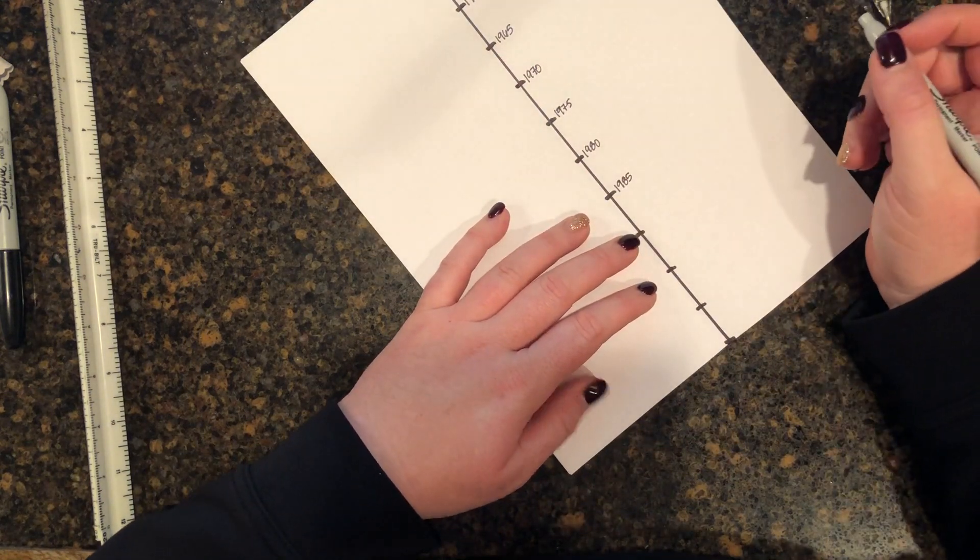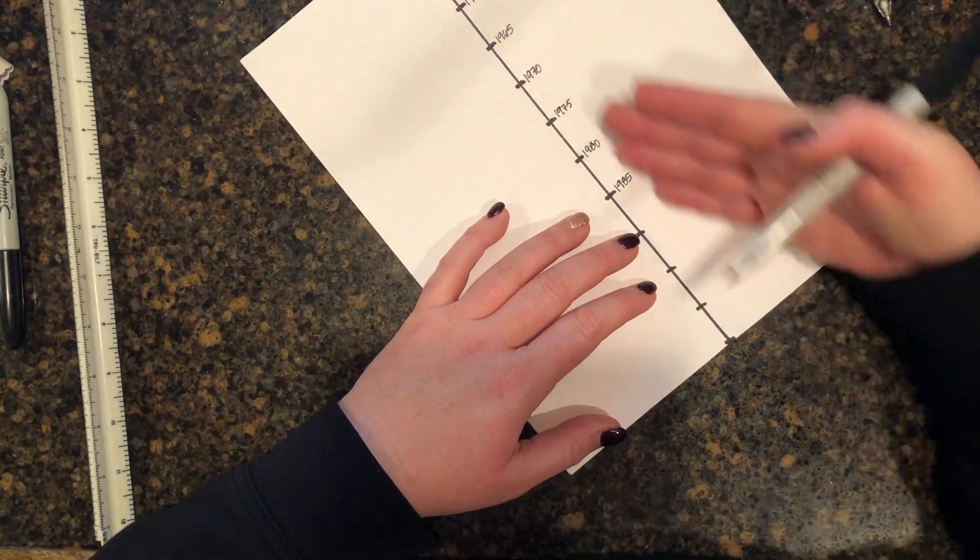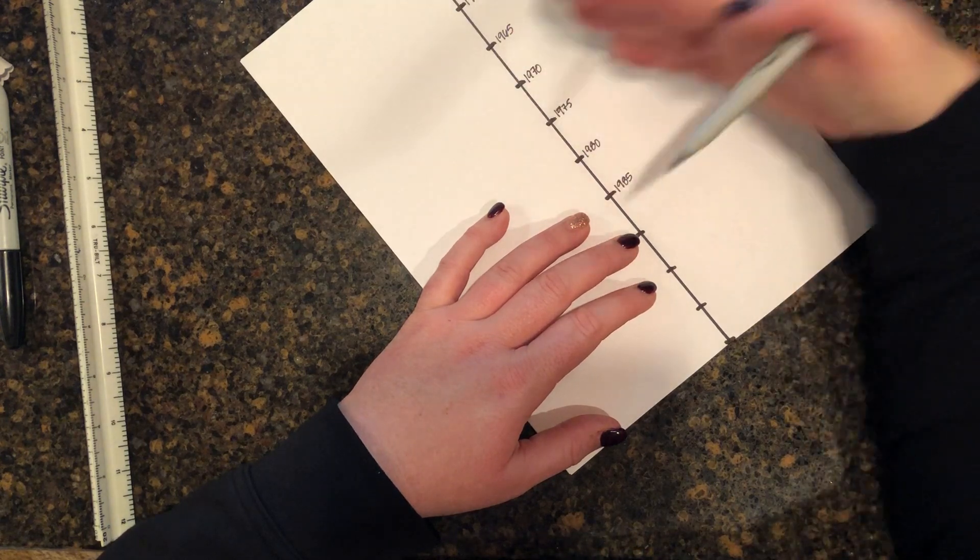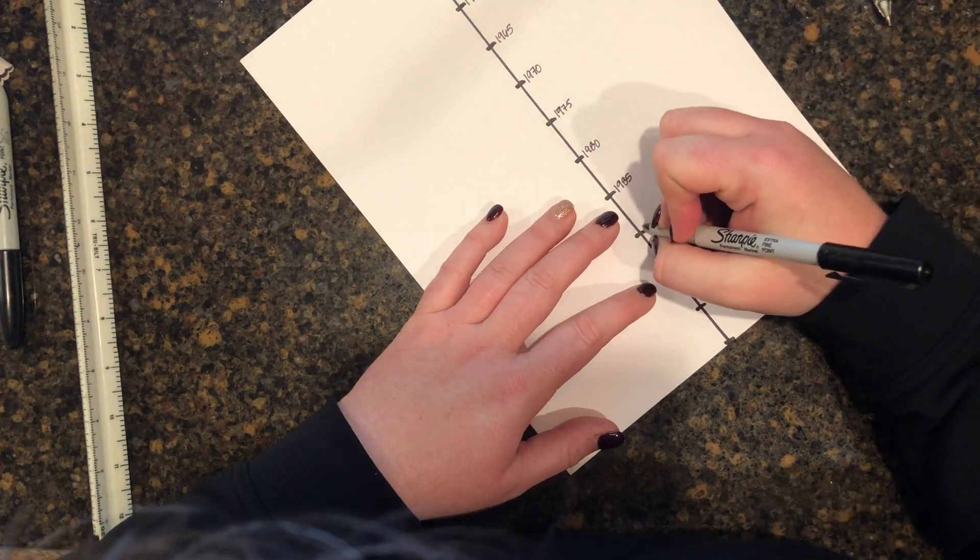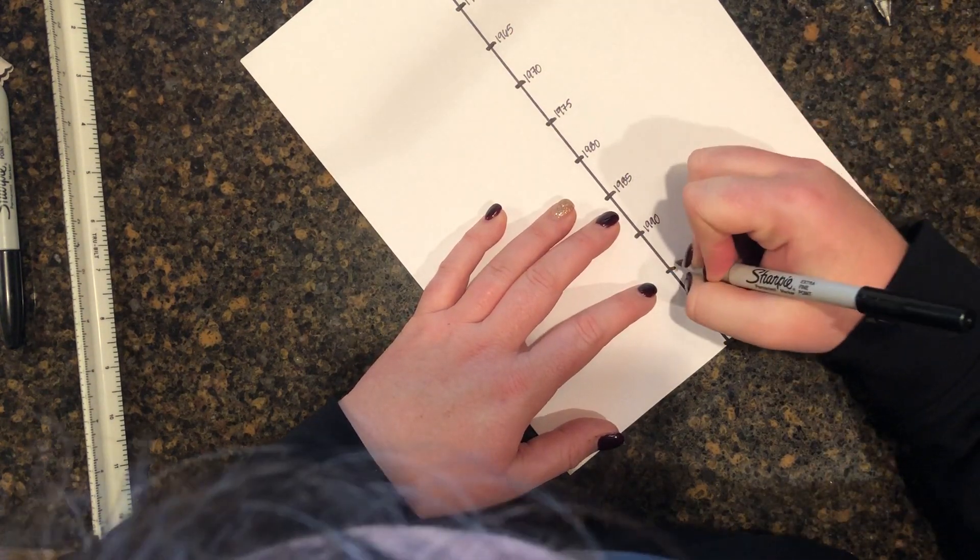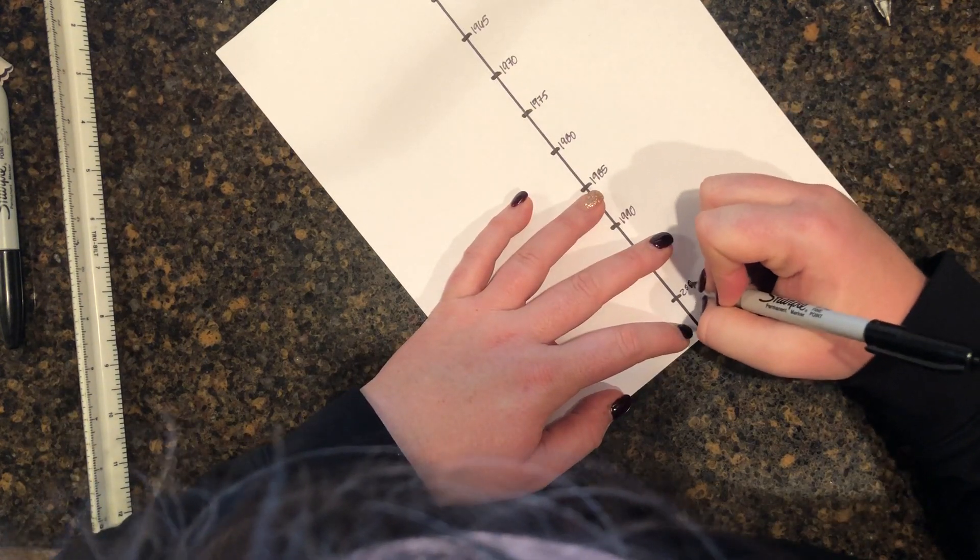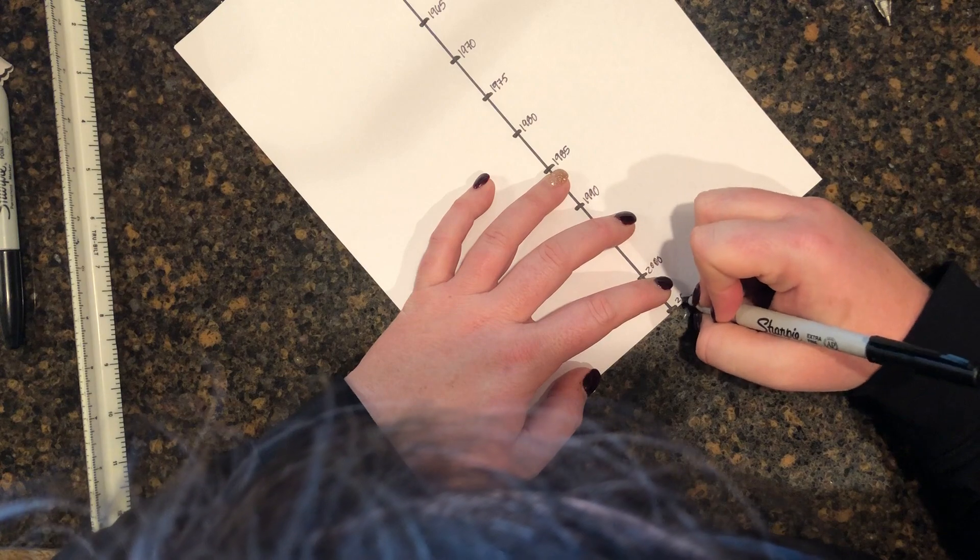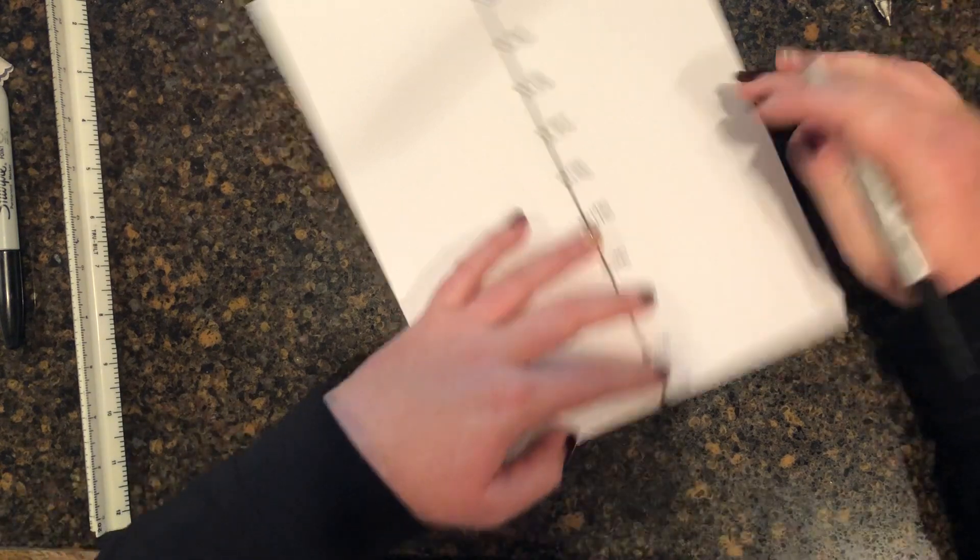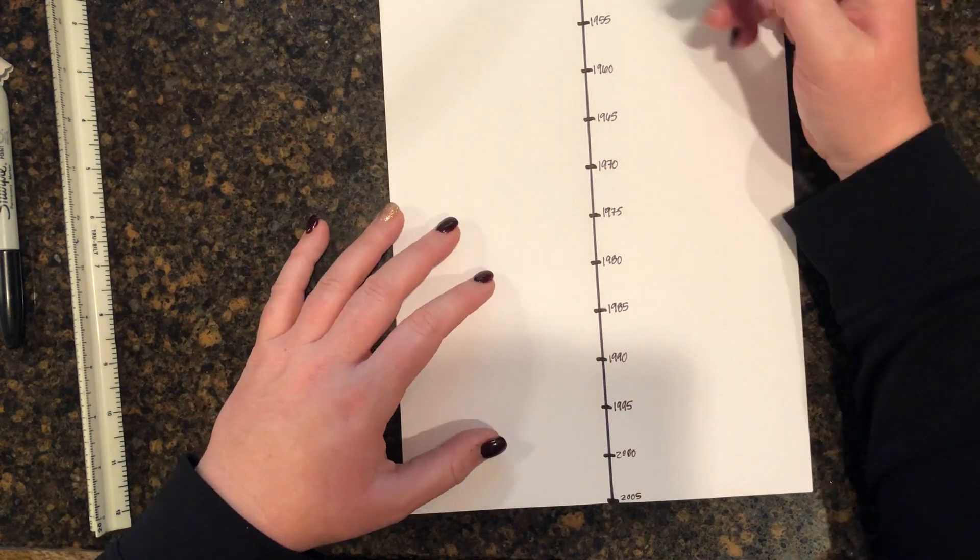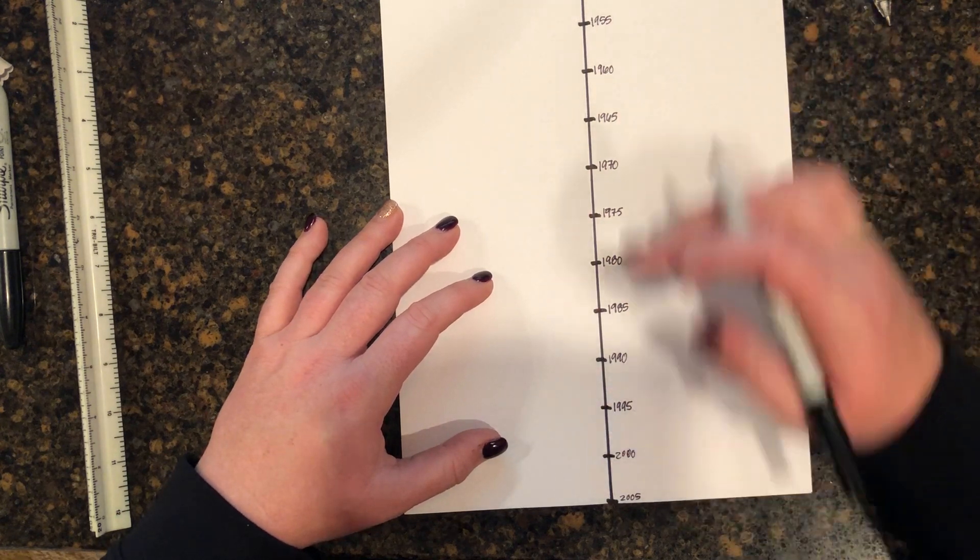Notice I'm not using a whole lot of space to write my years because I know this timeline is gonna be really full. I want to take less time for my years so I have more time to write, so I'm gonna write it kind of small. 1995, year 2000, and way down here is 2005.